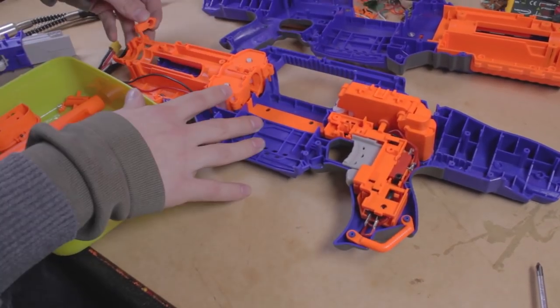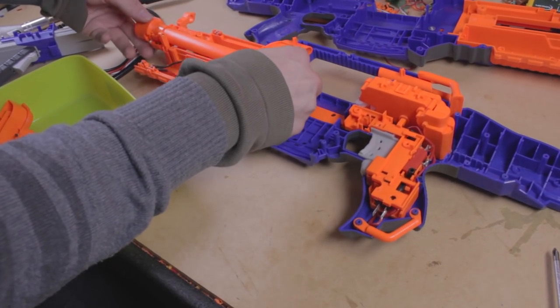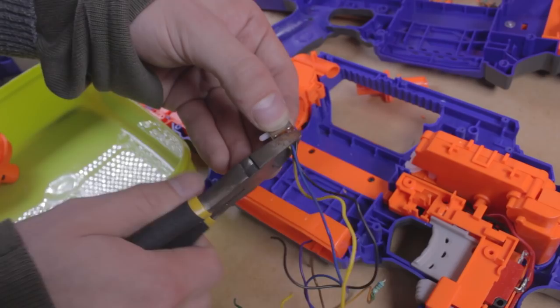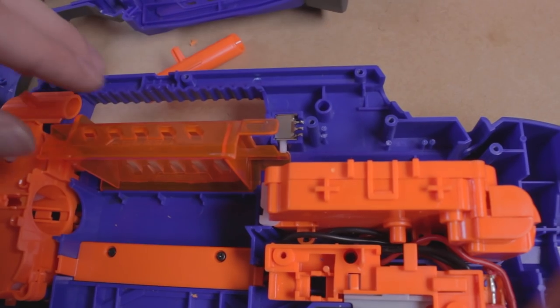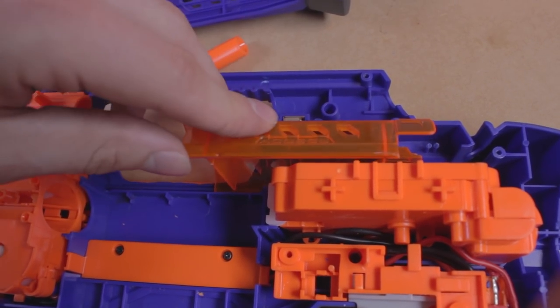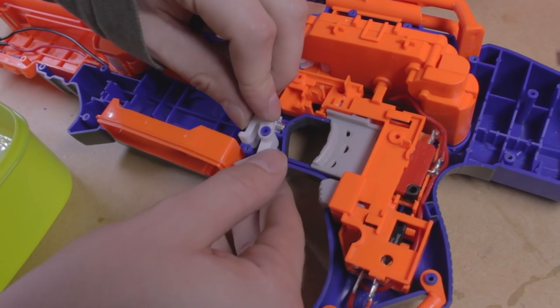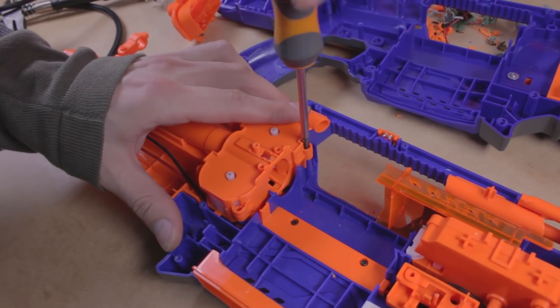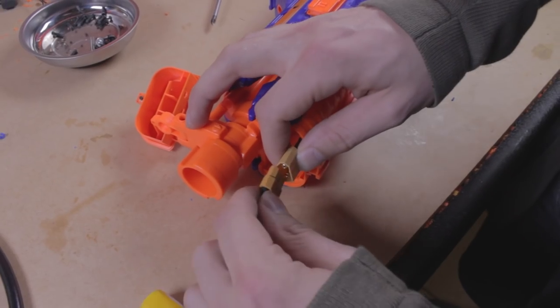Finish up by putting the rest of the internal cosmetic parts back in, such as the sling points, sight pieces, tactical rail tabs and the rest. To hold the jam door closed, cut off one of the old switches and put it back in place. You may need to hot glue this part in. Watch out for the magazine spring when it goes back in. It can jump out and is easily lost. All that is left is to screw down the flywheel cage and put the stock back in place. Put the shell back on, screw it closed and we're finished.